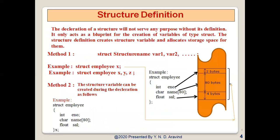Structure definition: the declaration of a structure will not serve any purpose without its definition. It only acts as a blueprint for the creation of variables of type struct. The structure definition creates structure variables and allocates storage space for them. There are two methods for defining a structure. Structure variables can be created at the point of structure declaration itself, or by using a structure tag explicitly when required.